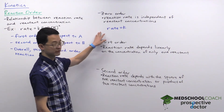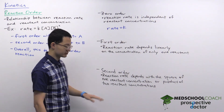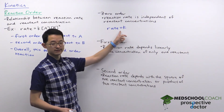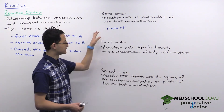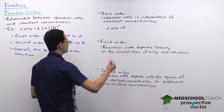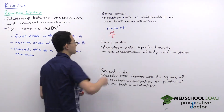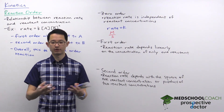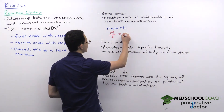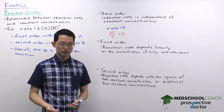Another important MCAT topic is determining the units of the rate constant for different orders of reactions. Interestingly, even though K is called the rate constant, its units differ for each type of reaction. Since rate has units of molar per second, and for a zeroth order reaction there are no concentration terms, K must have the same units as rate: molar per second.